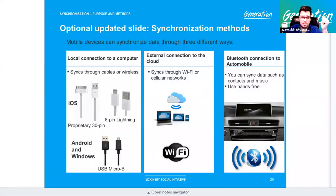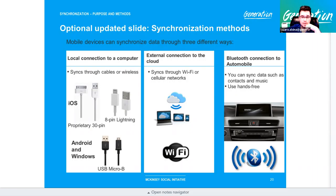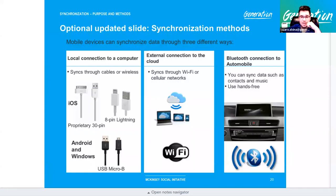Bluetooth is called the 'oddball' sync method. It is technically PAN — Personal Area Network. Bluetooth can be both local or external, because you can still get internet access through Bluetooth. On exam questions: if Bluetooth has internet access and you're syncing to the cloud, it's external. If you're only transferring music or data to a nearby device or computer, that is local. Be cautious when Bluetooth questions involve the cloud versus local computer context.